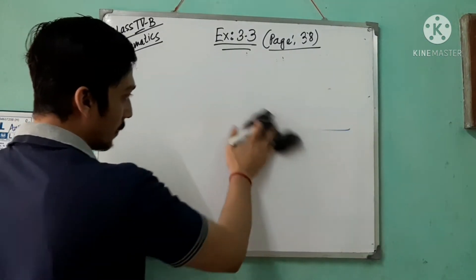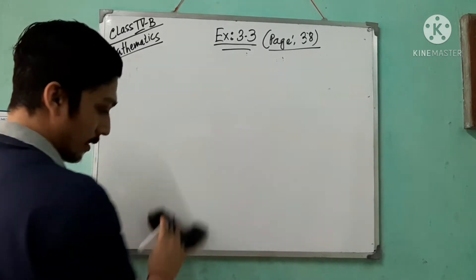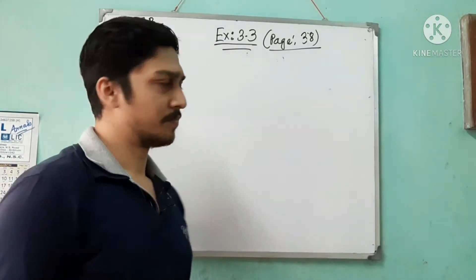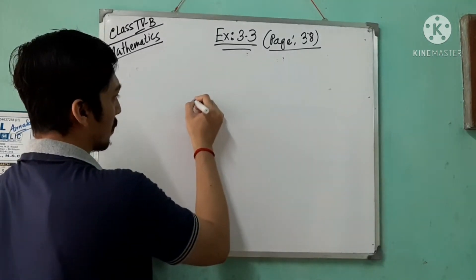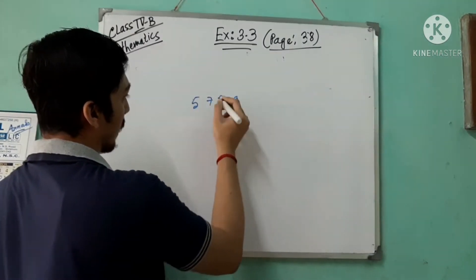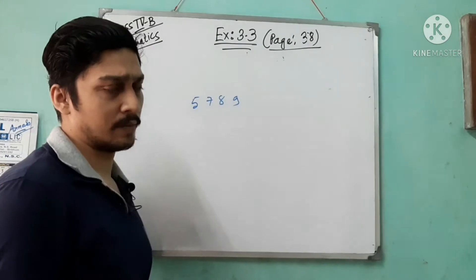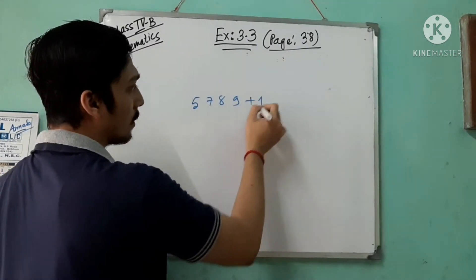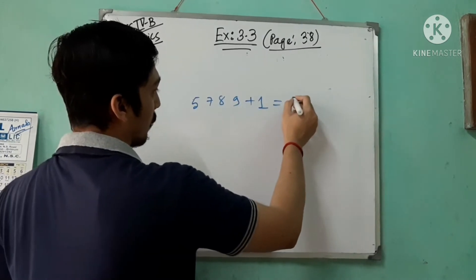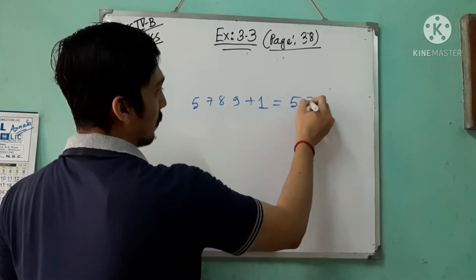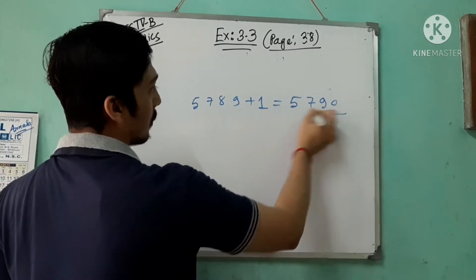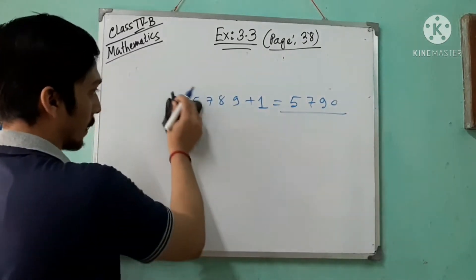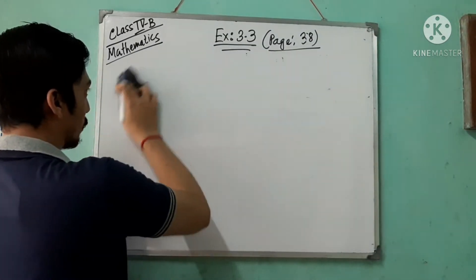Property number three: the successor. Suppose 5,789 — what is the successor of 5,789? You add plus one, so you get 5,790. That is the successor. This is property number three.